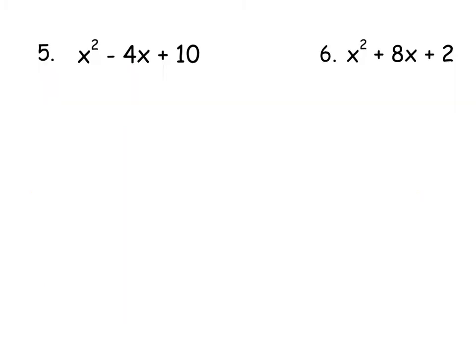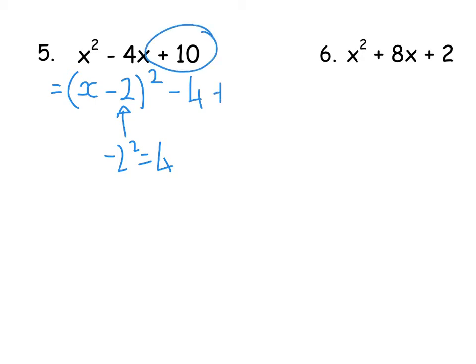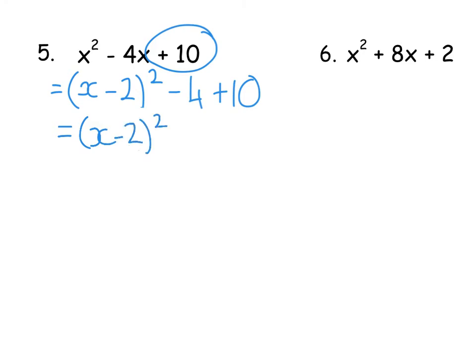Let's go through a real example following the steps. For X² - 4X + 10: step one, half the 4 gives 2, so it's (X - 2)². Then square that number: (-2)² = 4, so you take away 4. Then add on the +10 that was already there. So you have (X - 2)² - 4 + 10, which tidies up to (X - 2)² + 6. That's you completed the square.